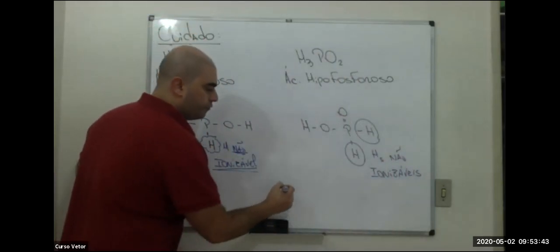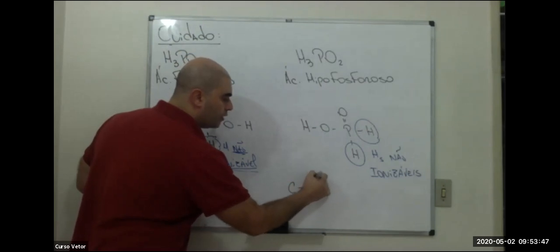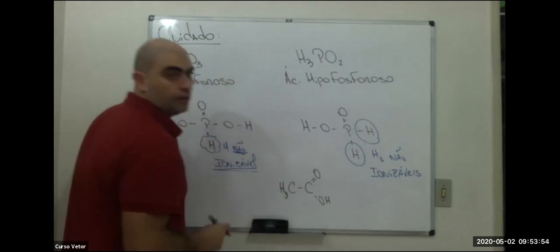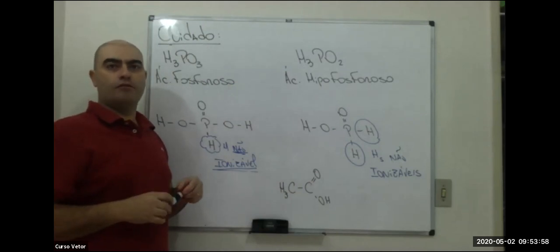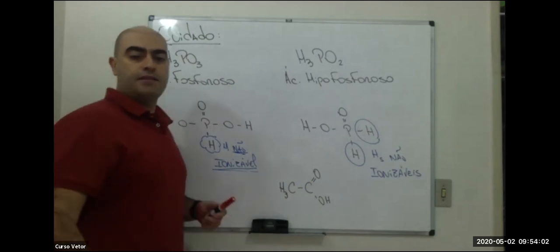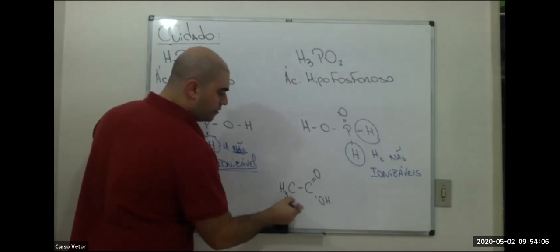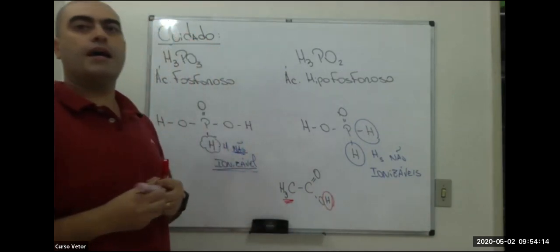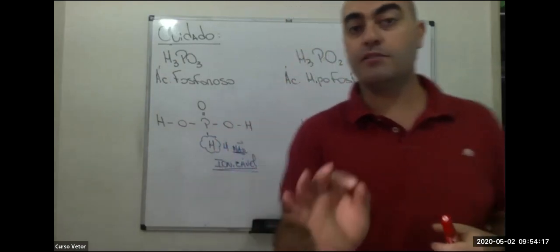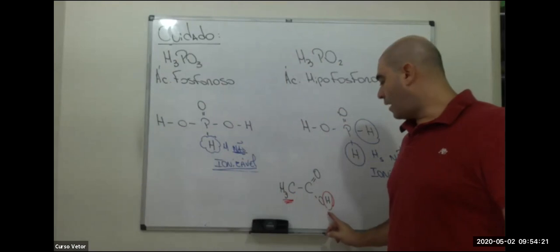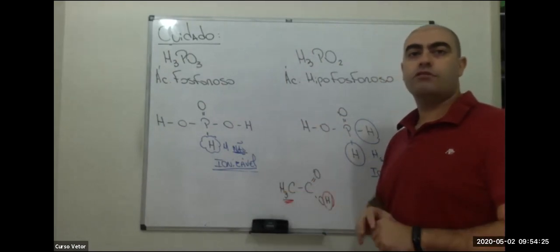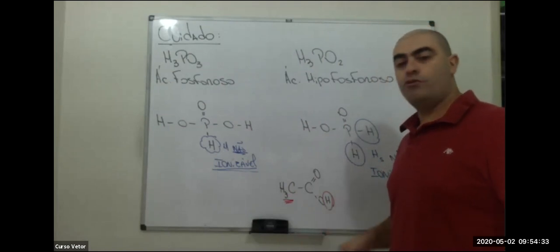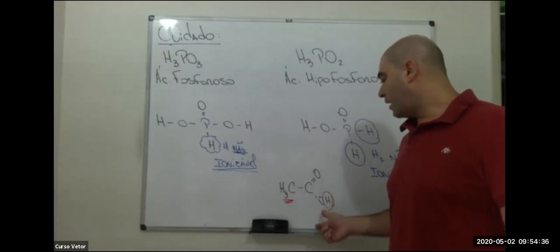Os Hs que não estão ligados ao oxigênio não sofrem ionização. Os ácidos orgânicos obedecem exatamente a mesma relação: no ácido acético CH3COOH, por exemplo, os três Hs do CH3 não ionizam — só ioniza o H do grupo carboxila C=O-OH, que está ligado ao oxigênio. Nos ácidos orgânicos, os hidrogênios ligados a carbono não sofrem ionização; só o H do oxigênio ioniza.